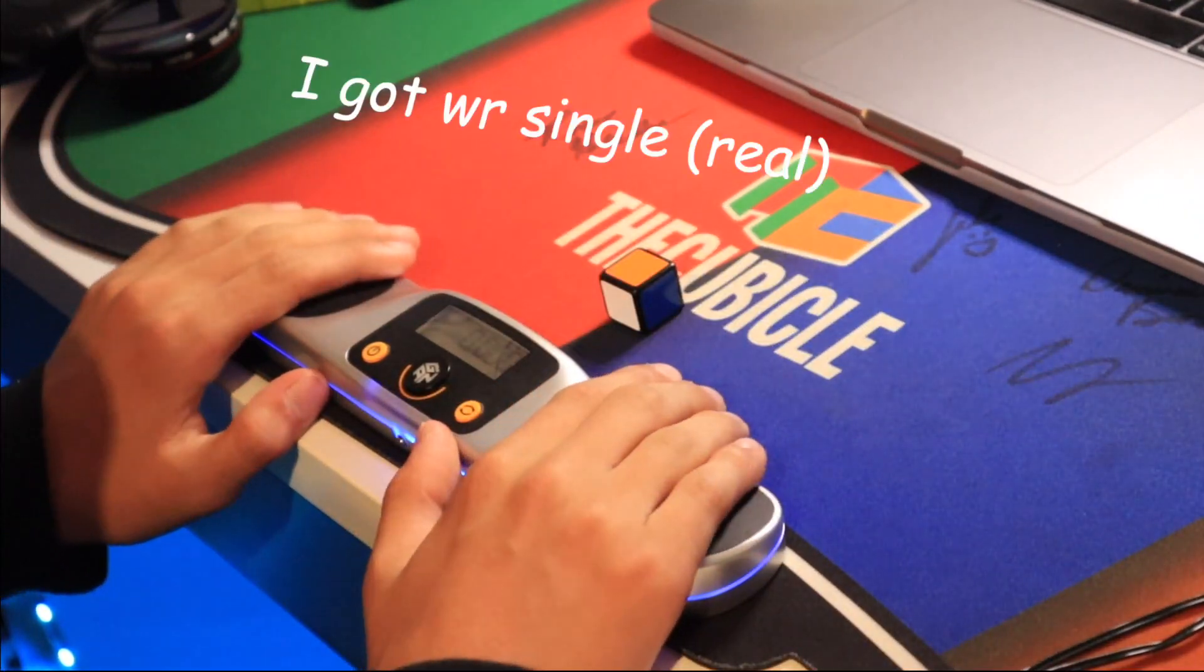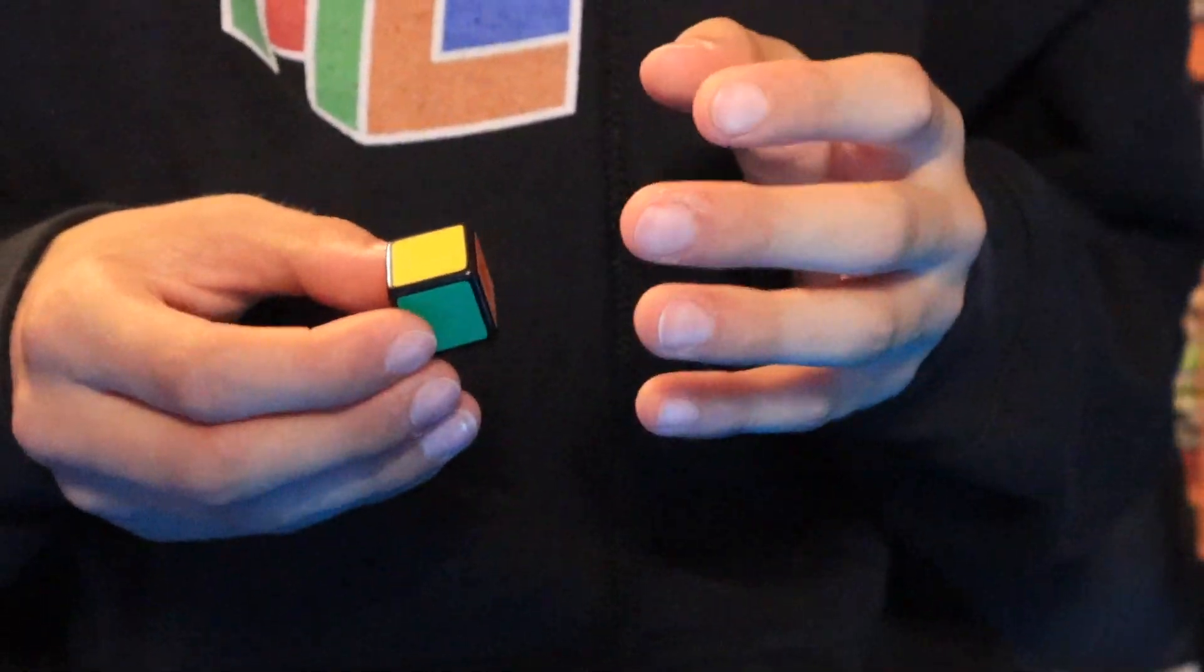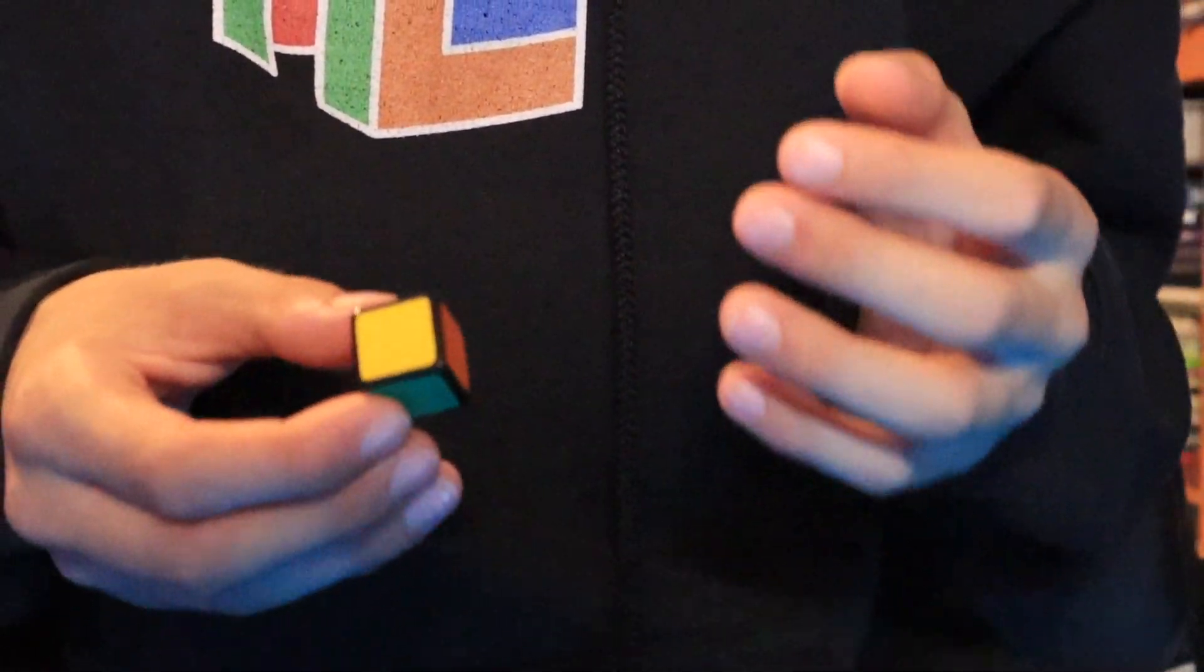Alright, orange cross. I think this is going to be my PB. And from there, it's kind of hard to find your first layer corners. So inspection is a big mess for 1x1.